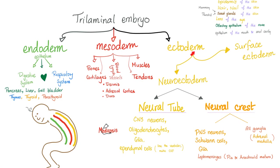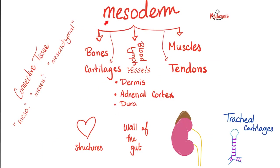How about the Ectoderm? You have two Ectoderms: the Surface Ectoderm and the Neuroectoderm. The Neuroectoderm gives you your nervous system — Central and Peripheral. The Surface Ectoderm gives you the Epidermis, Hair, and Nail. But today, we care about the Mesoderm.